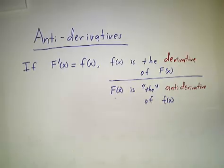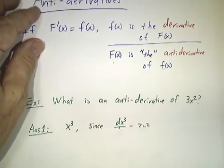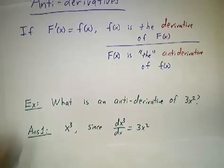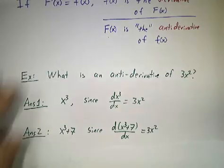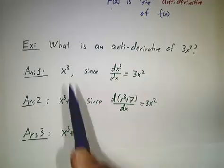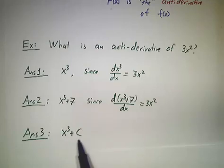We should be careful about when we say the. We tend to say the a lot, although it's actually inaccurate. Because what's the antiderivative of 3x²? We might say x³, because the derivative of x³ is 3x². Or you might say x³ plus 7, since the derivative of x³ plus 7 is also 3x². Or you could say x³ plus any constant. Really, we should say an antiderivative. x³ is an antiderivative. x³ plus 7 is a different antiderivative. x³ plus any constant is yet another antiderivative.